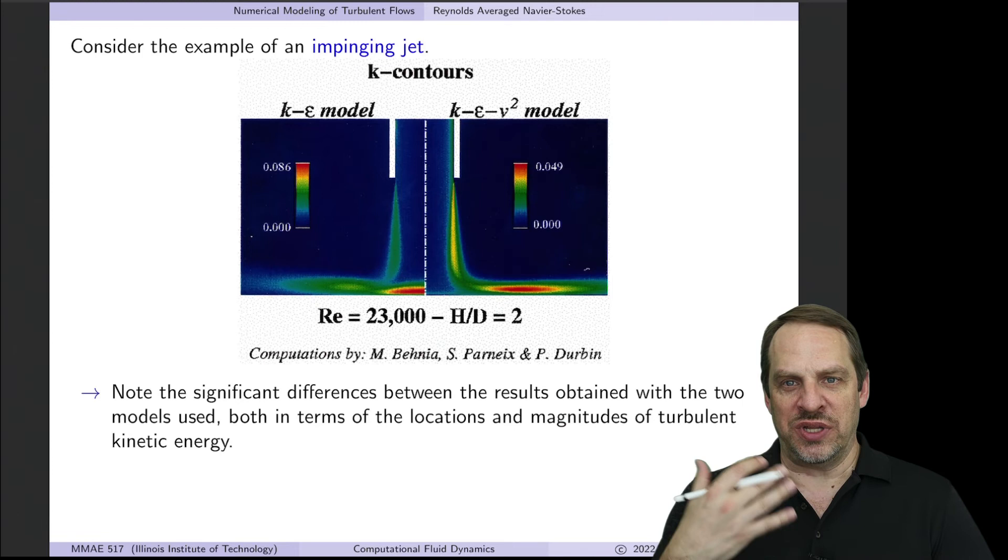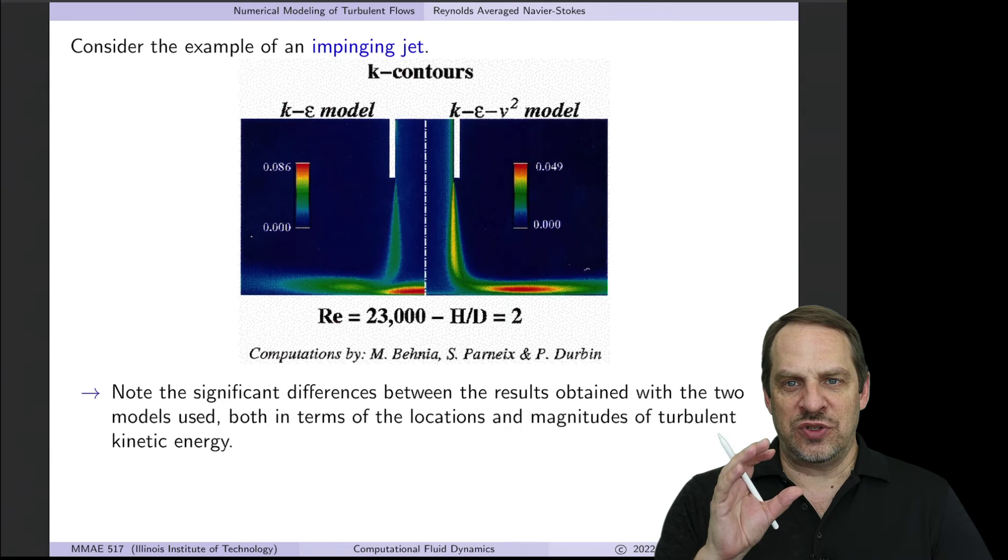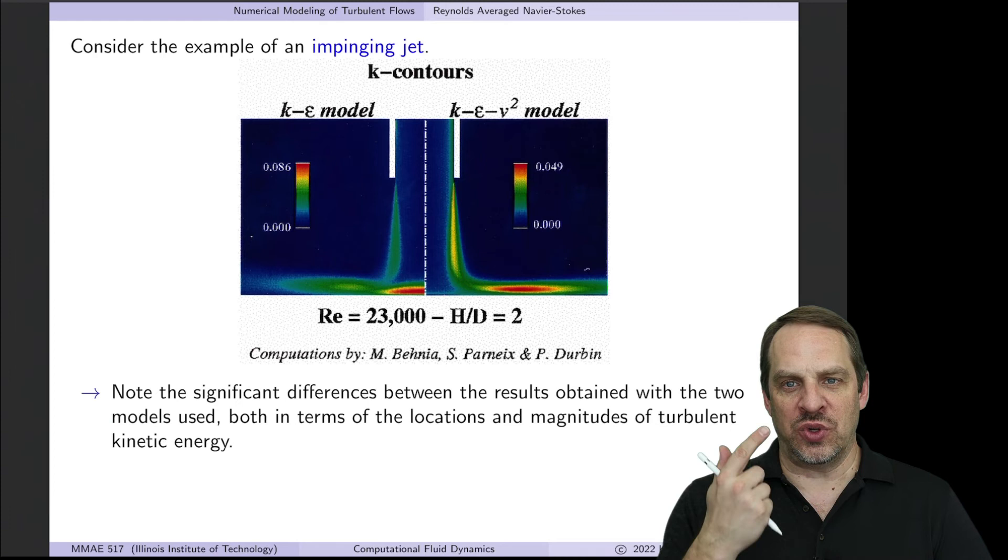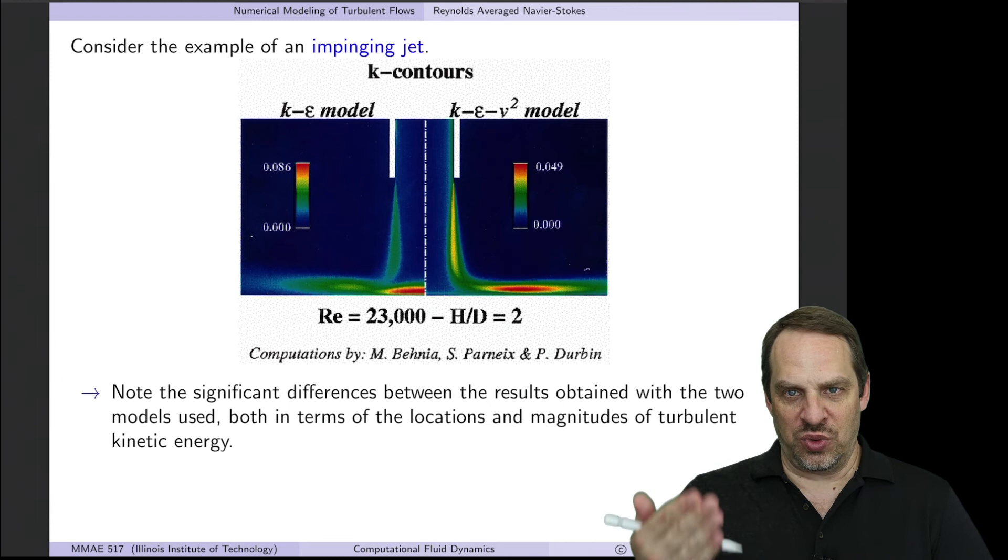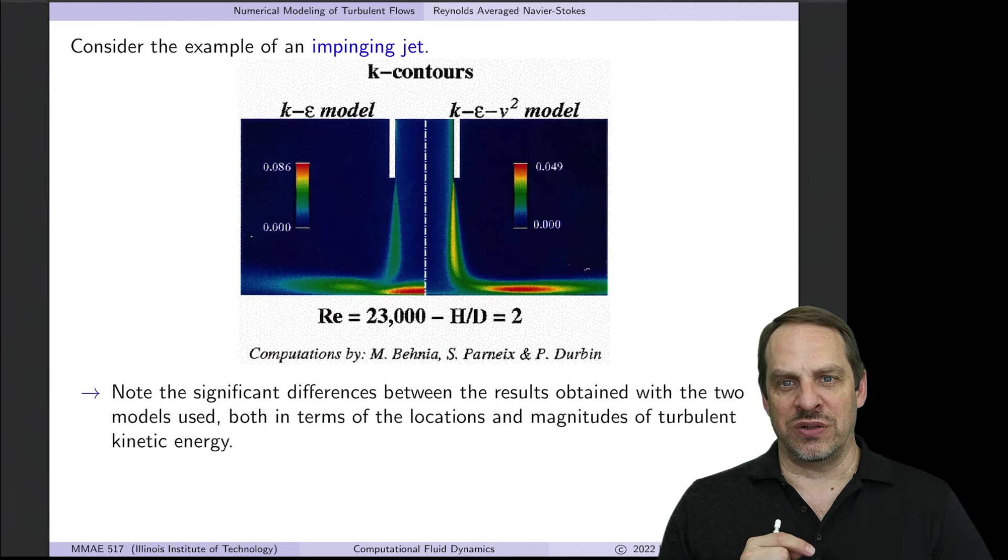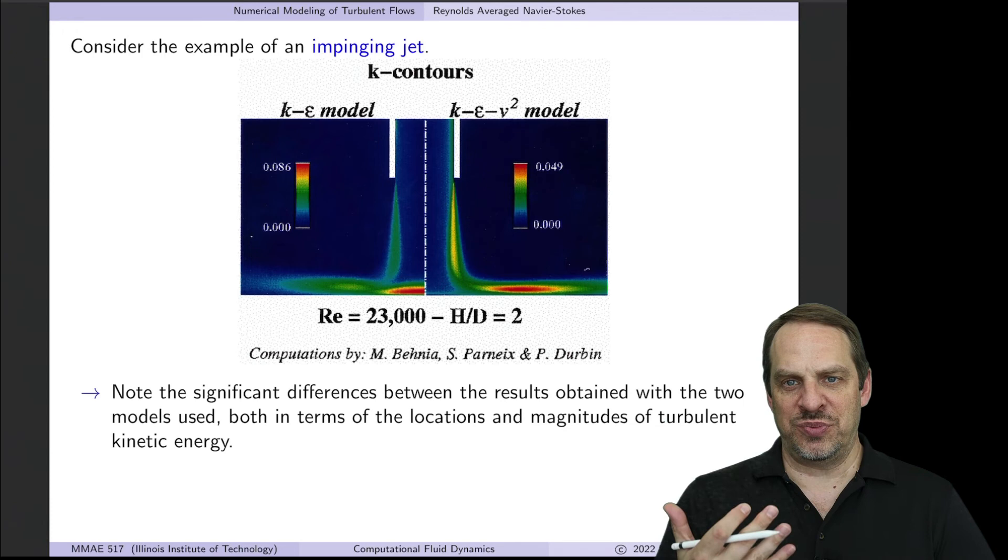So not only are the solutions quantitatively different in terms of numbers, they are qualitatively different in terms of the overall prediction of the flow. Of course, the problem is I don't know which one is right unless I go through the verification validation process. This is a problem we have all the time with RANS. You'll get a solution, but you can get very different results if you use different models. If you work in industry, you pull down that menu and select different models and get different results, well, now you're in a real pickle because you have to use your engineering judgment to determine which one is most accurate.